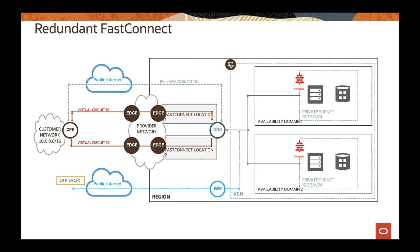For FastConnect, the recommendation is to use multiple virtual circuits — two virtual circuits connecting from your on-premises to OCI through the provider network or FastConnect edge services. That way, if one virtual circuit goes down, the second one keeps the connection from your location to OCI. Always use multiple virtual circuits for FastConnect HA.